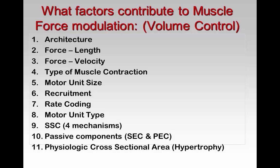I put SSC as a global number nine, but there are four mechanisms within that stretch-shortening cycle, and you should be able to explain each mechanism that contributes to it. One of those mechanisms — and I'm putting this separate — is the passive components: how does the SEC, or the tendons, and the PEC, or the perimysiums, contribute to muscle force production? And then there's physiologic cross-sectional area, or hypertrophy. If we increase the size of the muscle fibers, we will increase the sarcomeres in parallel and increase force production. The question becomes: can we do hyperplasia, which is adding new muscle fibers? I think there's enough data to say that we can, but it's still being debated.